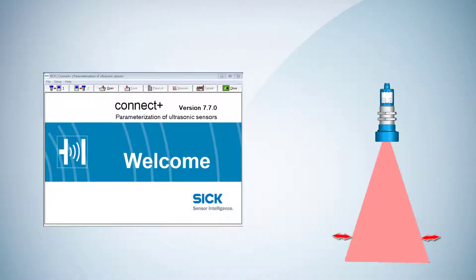The feature variable sound cone adjustment is used to adapt the width of the ultrasonic cone shape with the computer software Connect Plus.